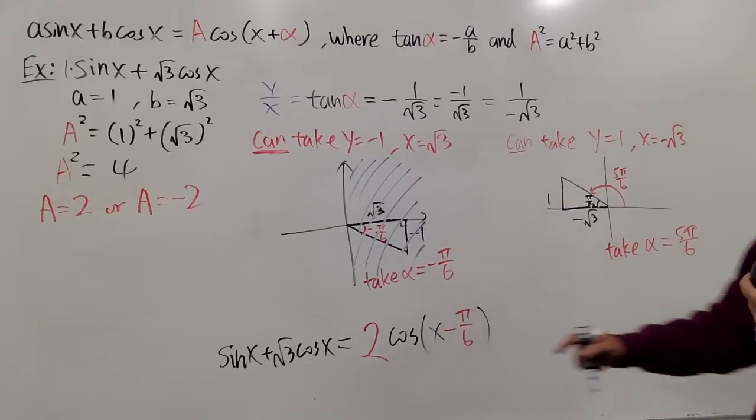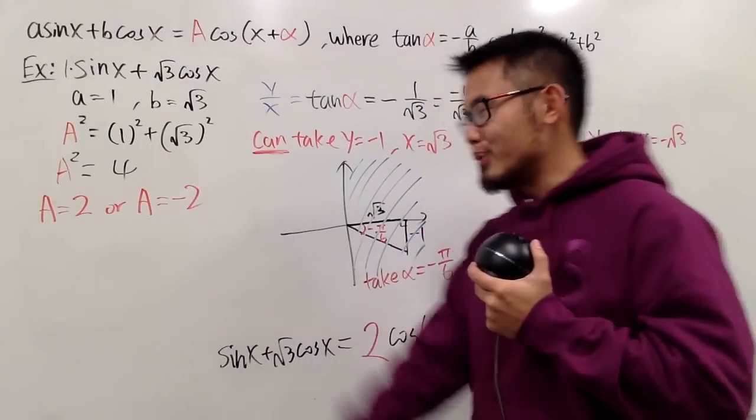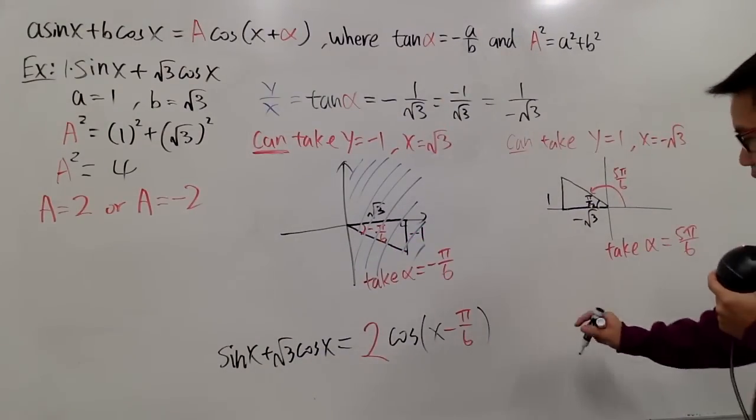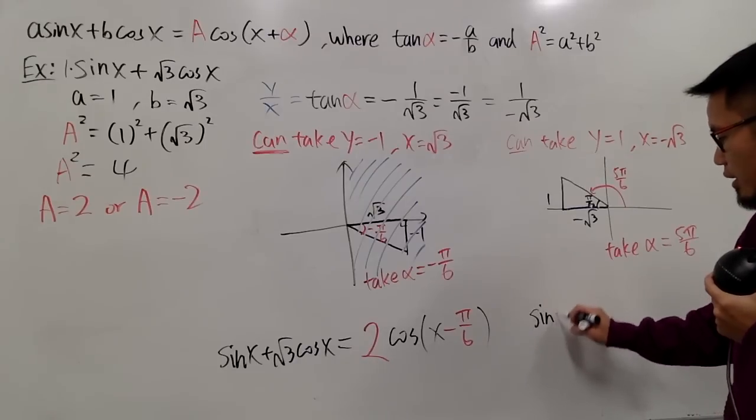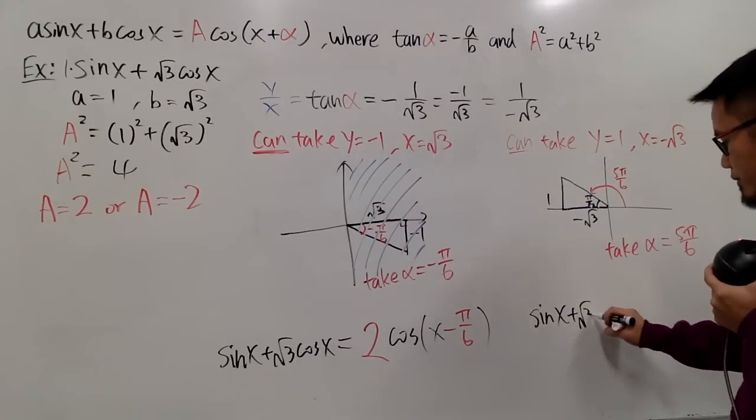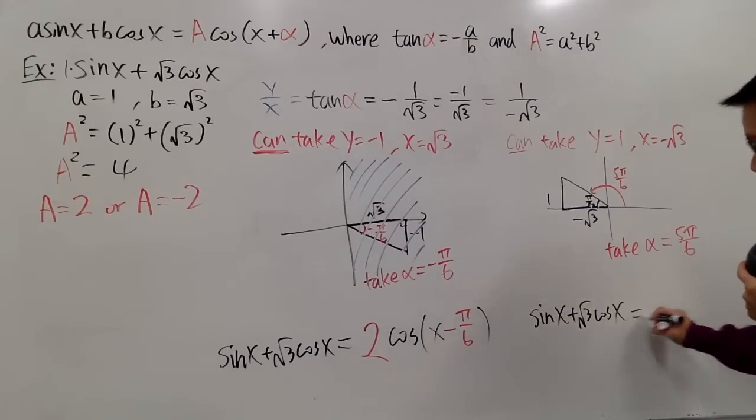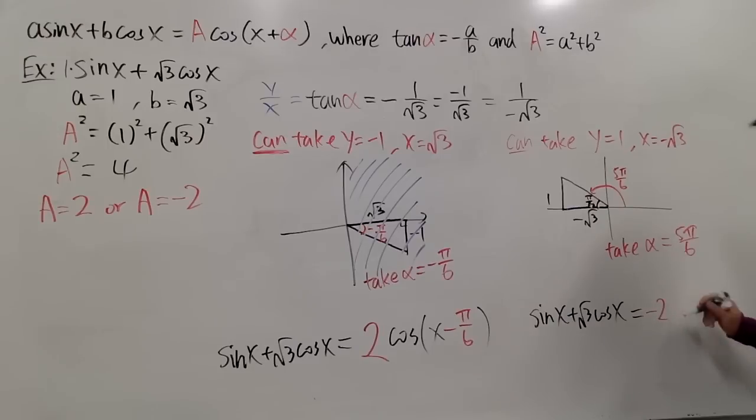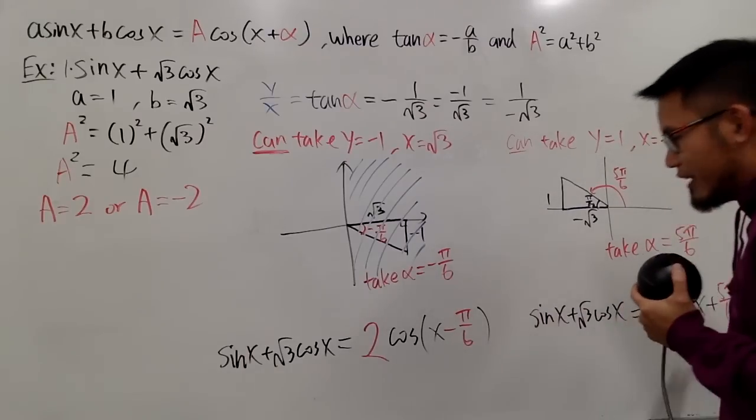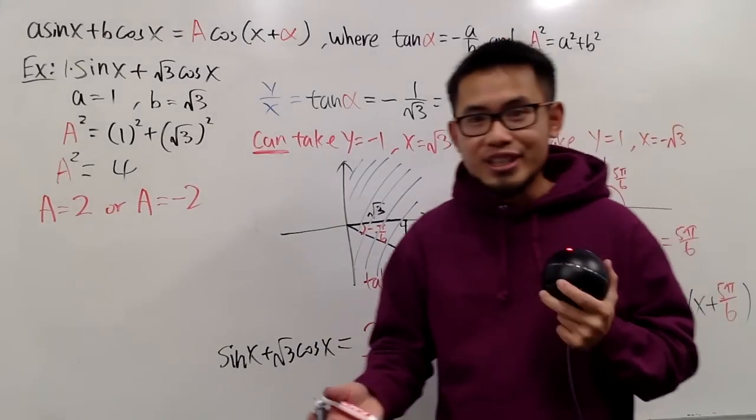Now, if the triangle happens to be on the left-hand side, we will have to use the negative A value. So I will tell you that sine of x plus square root of 3 cosine x, this is equal to negative 2 times cosine of x. This is a positive version for this angle, so we will say we add 5 pi over 6 like this. Both of the answers are legitimate.